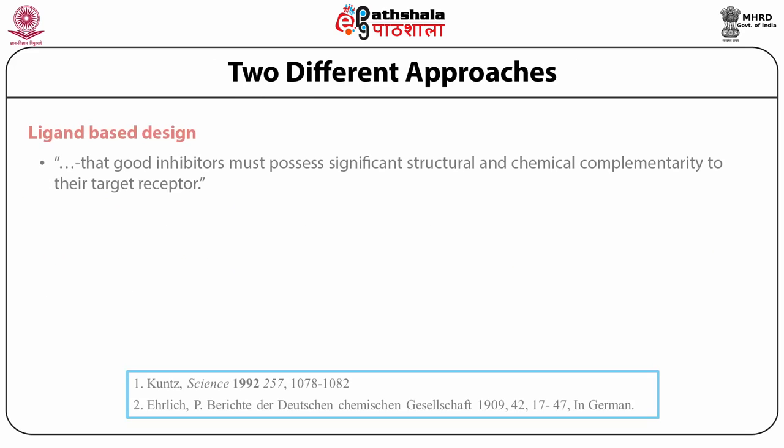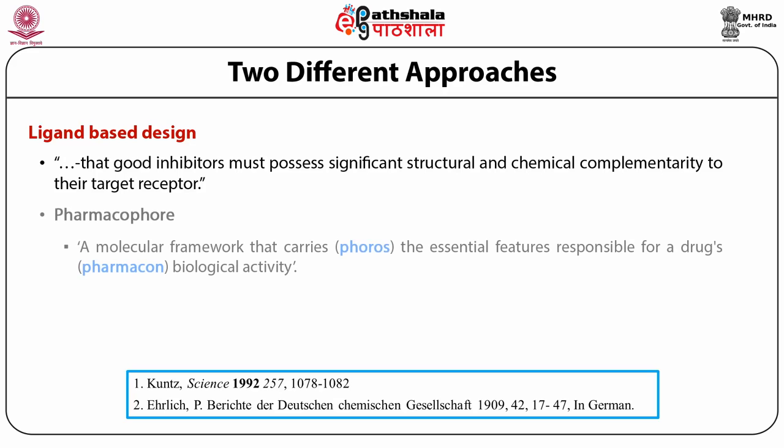There are two major applications driven by chemical structures and bioactivity. Pharmacophore is the most important one in these two activities — the bioactivity relationship with chemicals. Pharmacophore is a word taken from Greek words: 'phoros', meaning the essential features responsible for a drug, and 'pharmakon', meaning drug. So pharmacophore means the features which are responsible for drugs or biological activity.